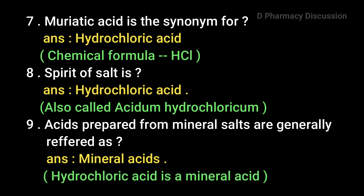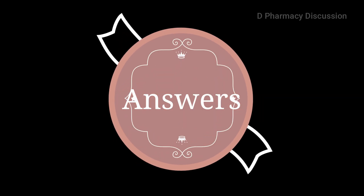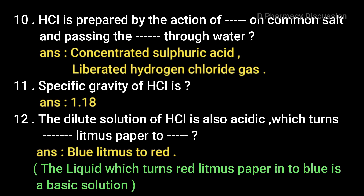Ninth question: acids prepared from mineral salts are generally referred to as mineral acids. Hydrochloric acid is a mineral acid. Next point: HCl is prepared by the action of concentrated sulfuric acid on common salt and passing the liberated hydrogen chloride gas through water. Next point: the specific gravity of HCl is 1.18.